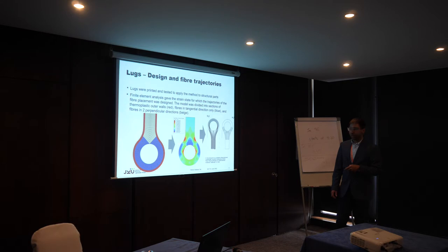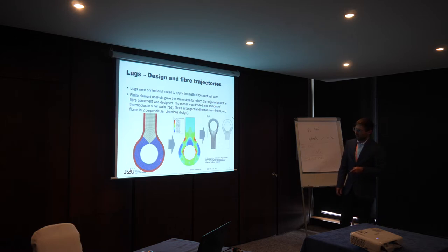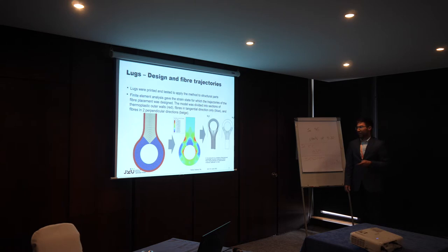To do that we have to perform preliminary FE analysis. We divided our 2D model into an outer perimeter which is just plastic, a uni-axially reinforced part, and a bi-axially reinforced part. We get principal strains and principal strain directions from finite element analysis — these are the major and minor principal strains in 2D.